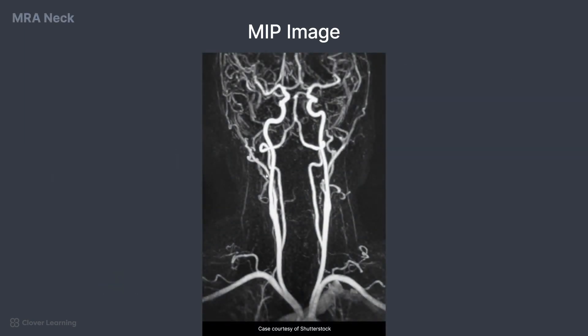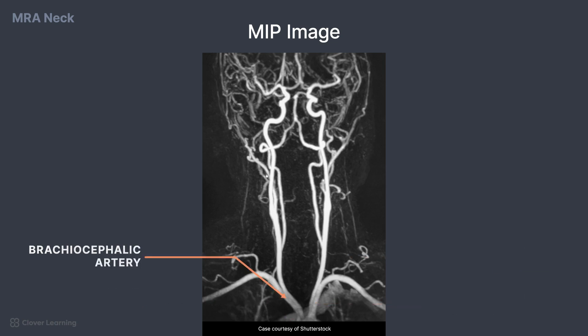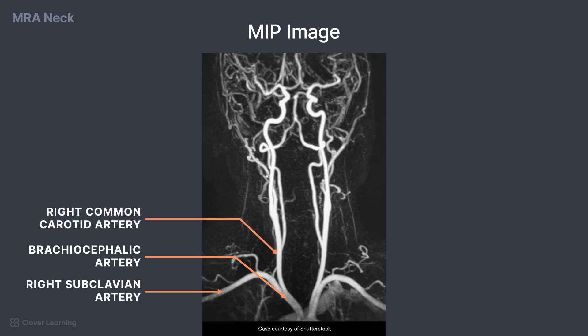Let's take a look at some important structures on a MIP image of an MRA of the neck. At the bottom of the image, the aortic arch can be seen where the brachiocephalic trunk, left common carotid artery, and left subclavian artery are originating. The brachiocephalic artery then branches into the right subclavian and right common carotid artery. The left common carotid artery originates from the aortic arch.